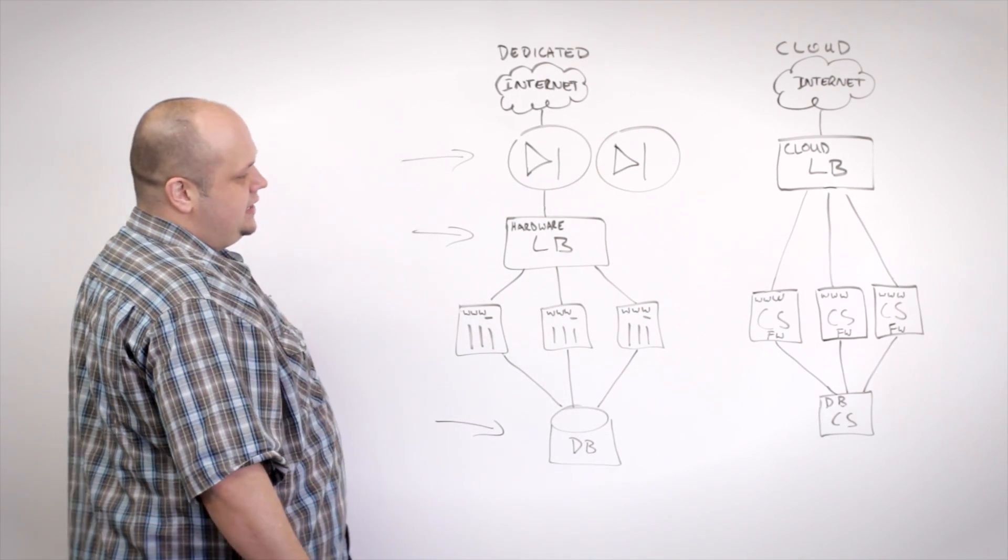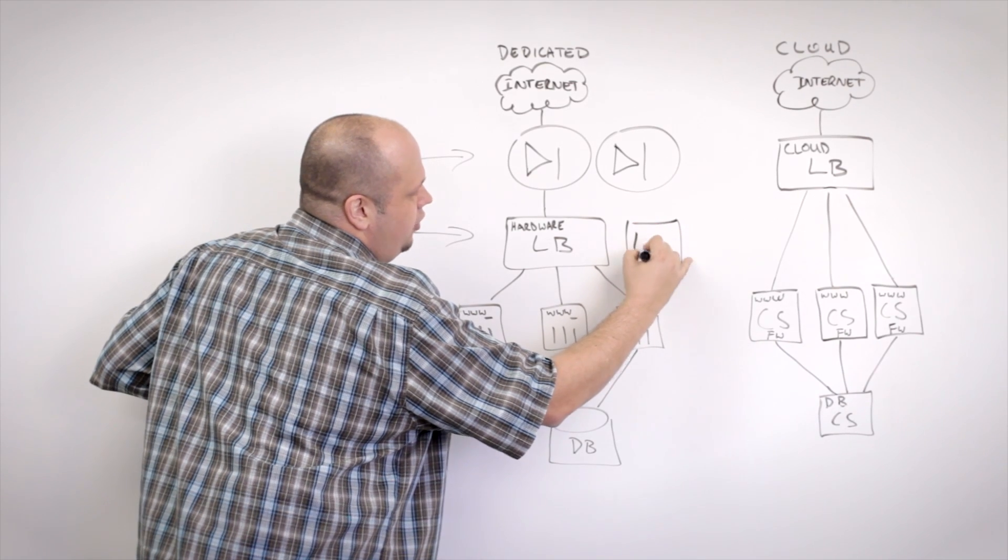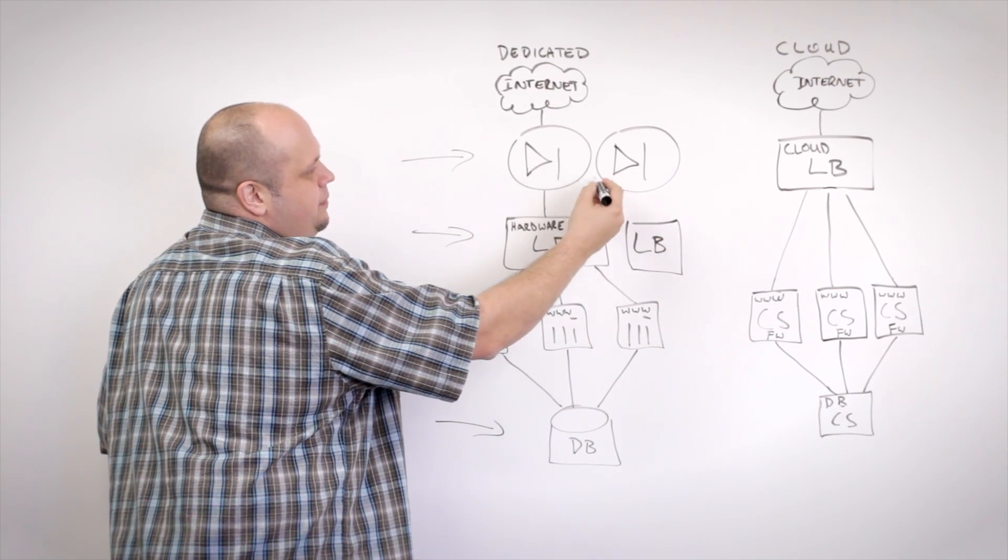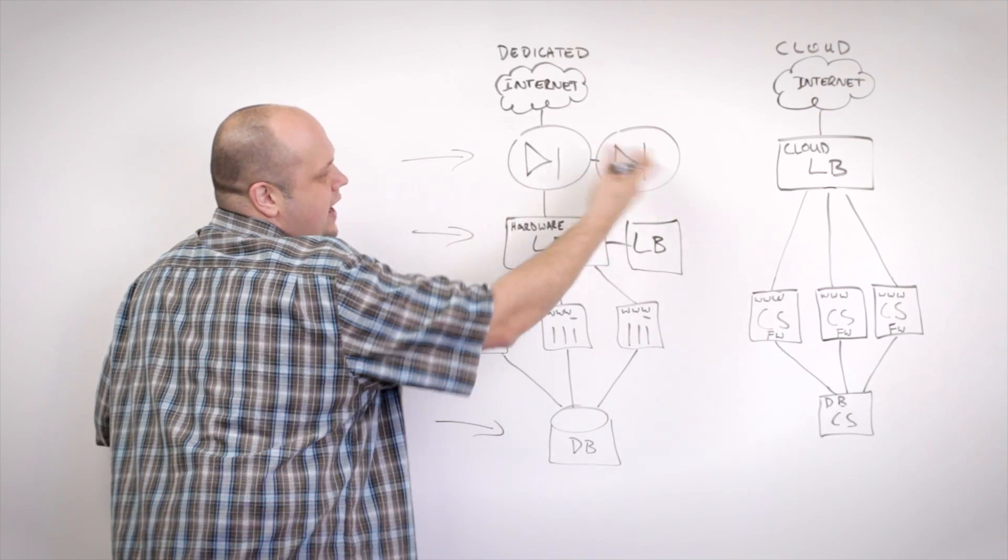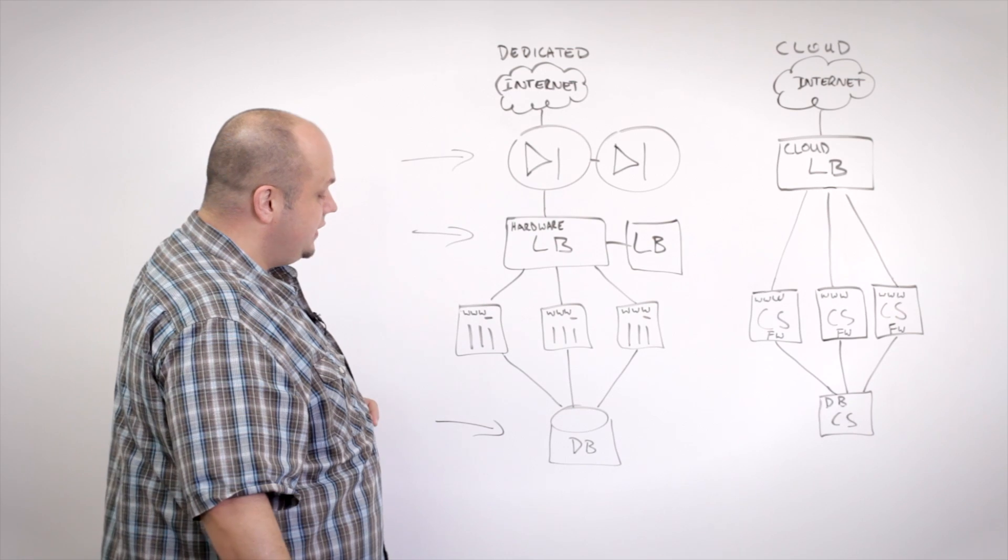In addition to that second redundant firewall, you would also need a second redundant hardware load balancer. And you could set these up in pairs so that they would have failover capability between the actual physical boxes that you were running that on.